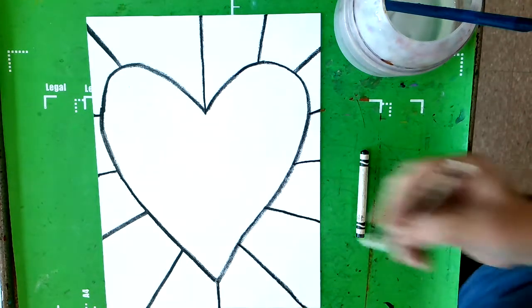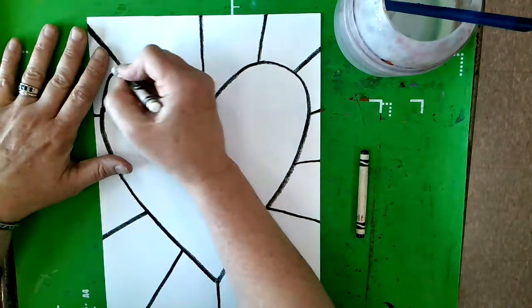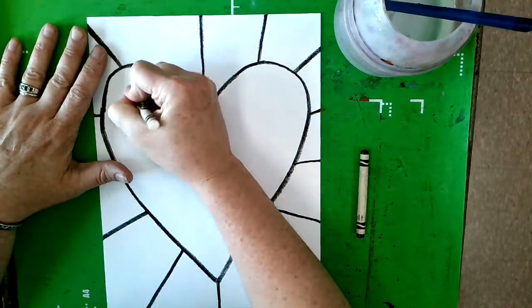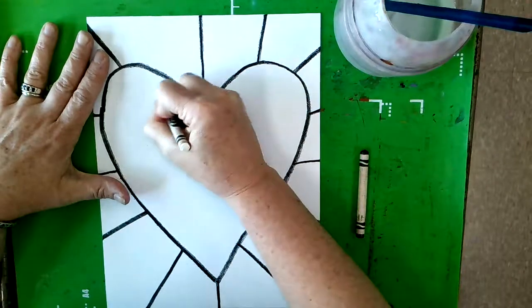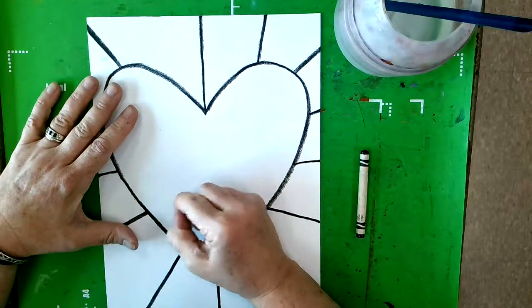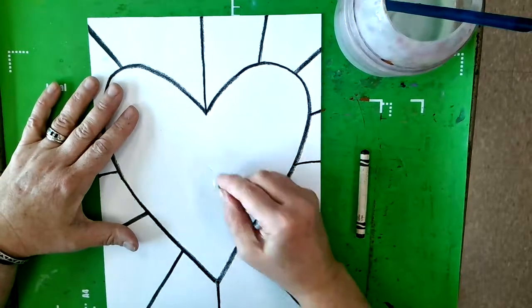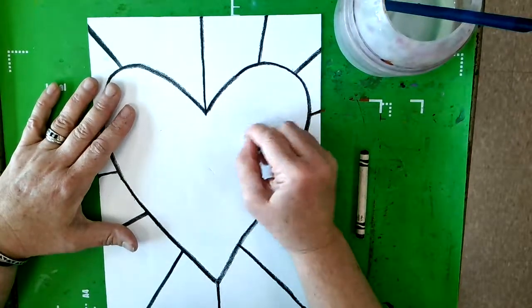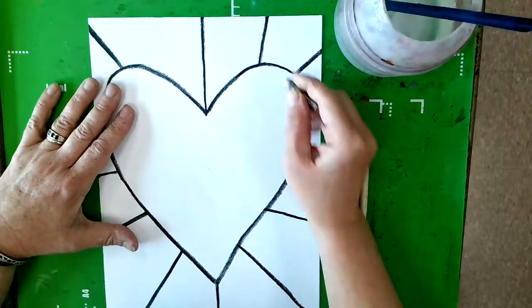I am going to draw all kinds of surprises in here with the white crayon. You're probably thinking, Miss Greenhouse, you're crazy. Oops, broke it. You can't even see that. Oh, but you will. You'll be able to see it after we paint on it.